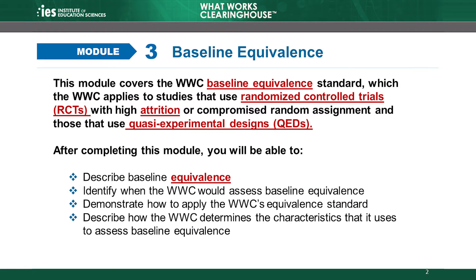The WWC uses the baseline equivalent standard to determine whether the intervention and comparison groups in a study were similar before the start of an intervention. This is important because establishing equivalence between the two groups at baseline gives us more confidence that any differences in measured outcomes between the two groups were caused by the intervention.